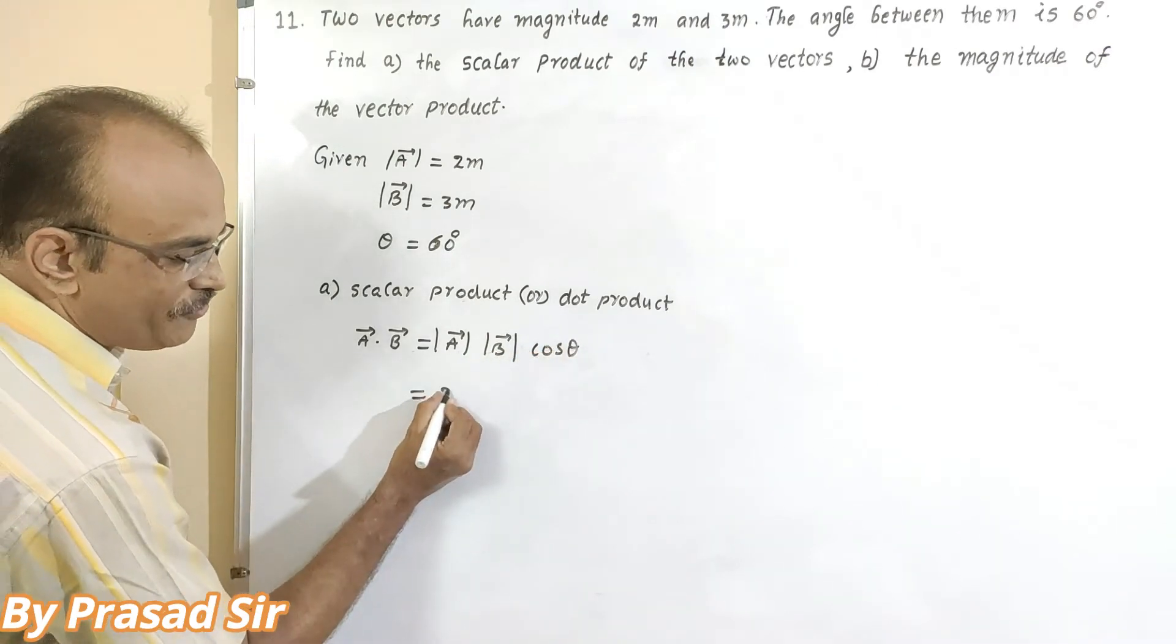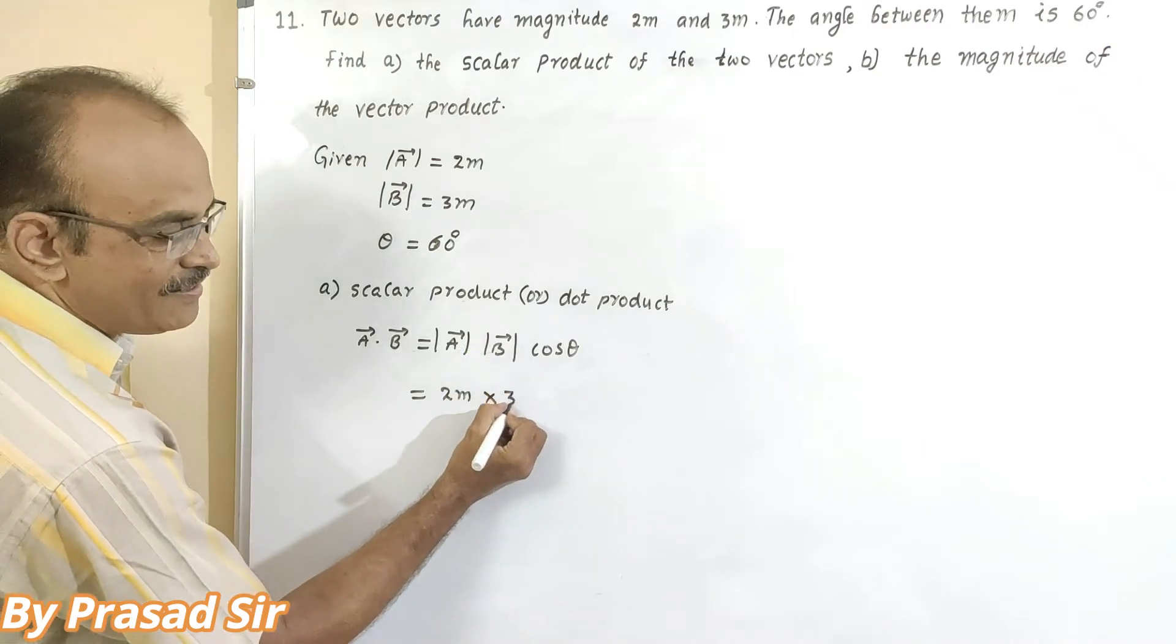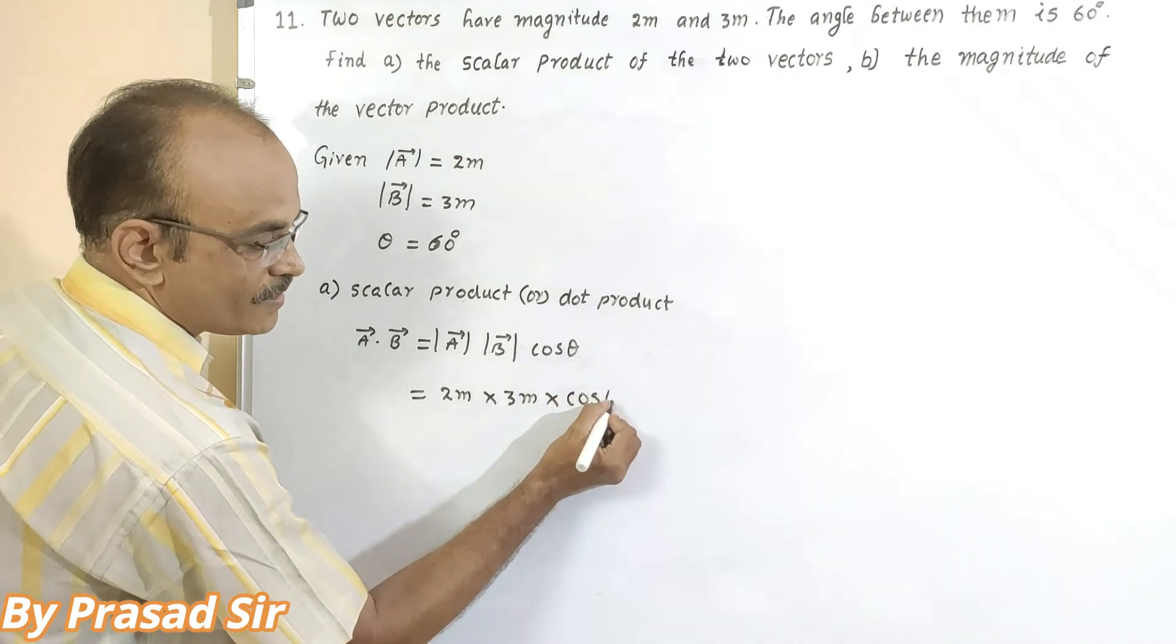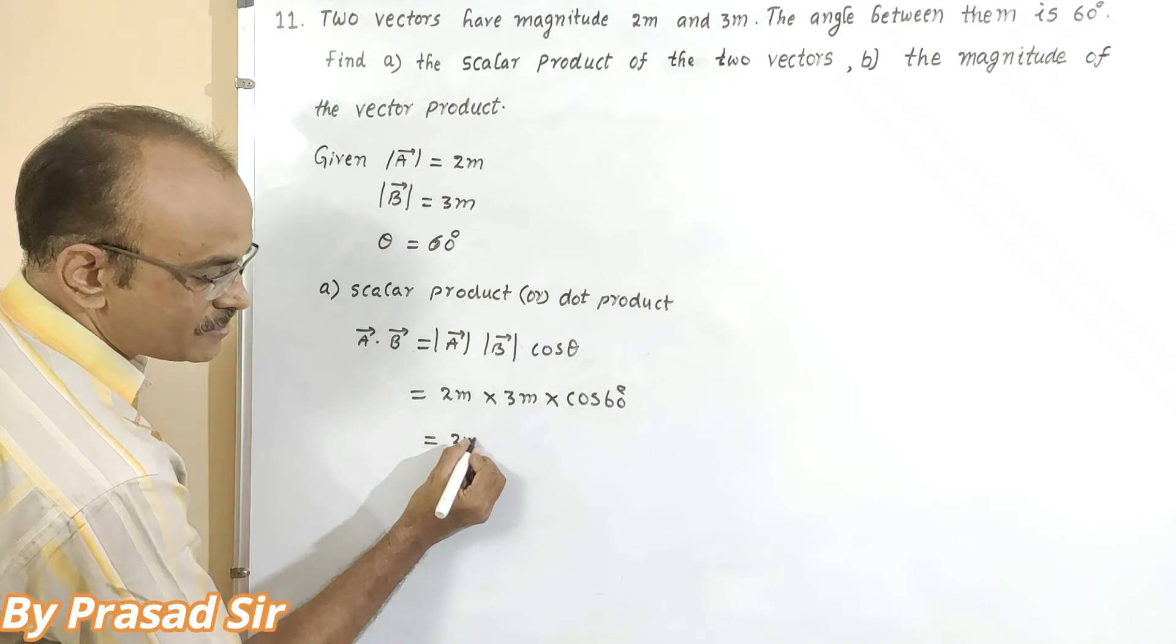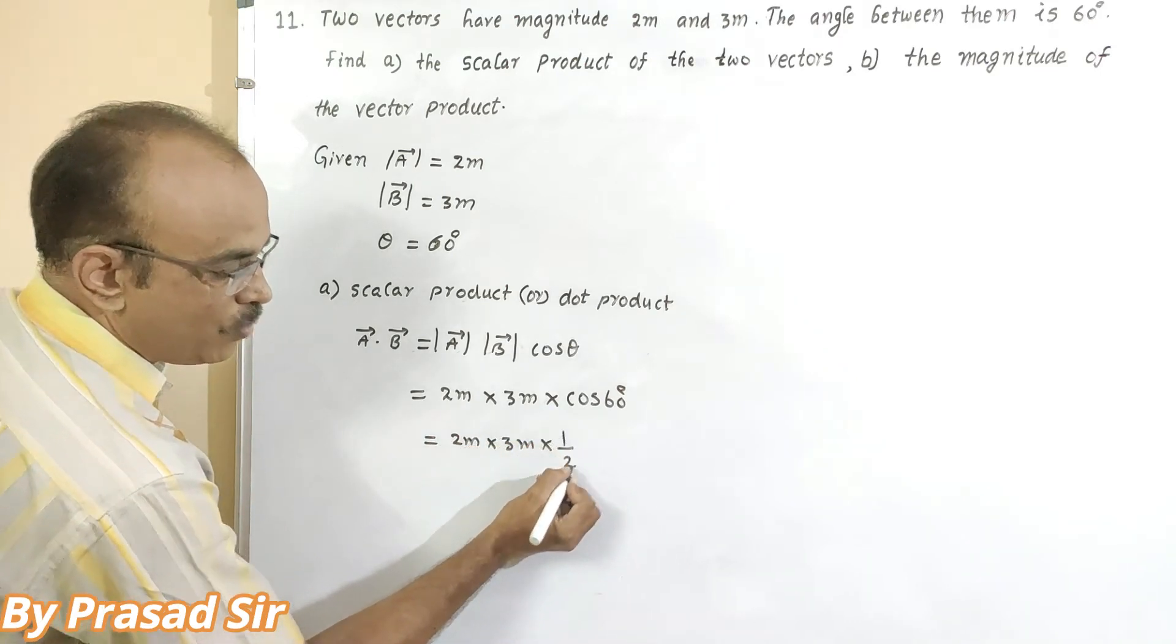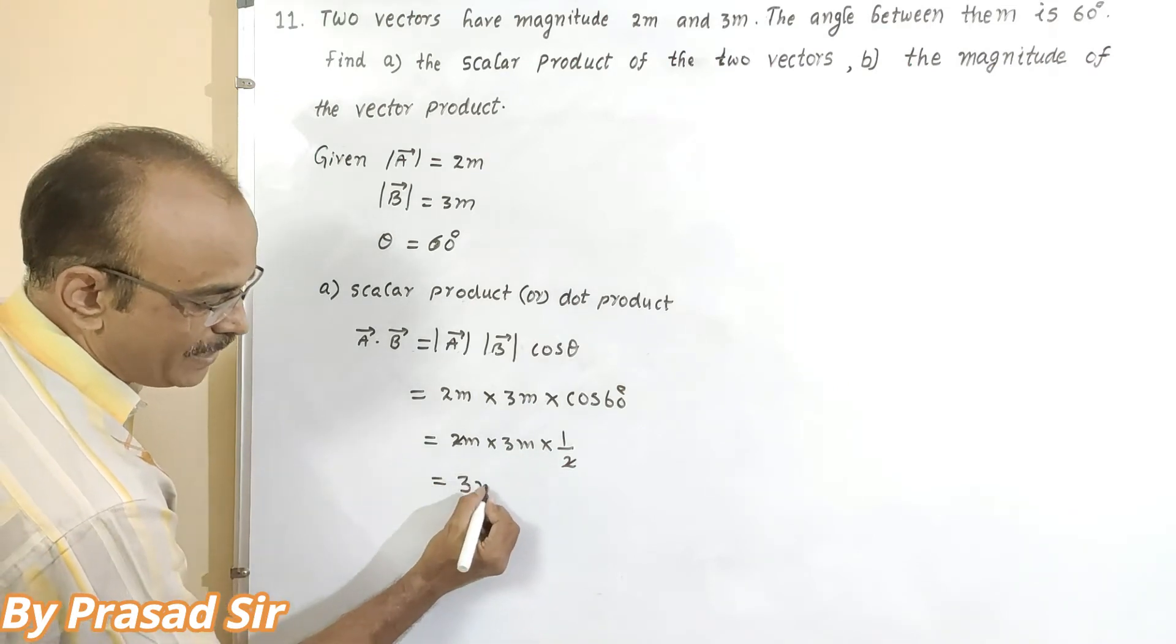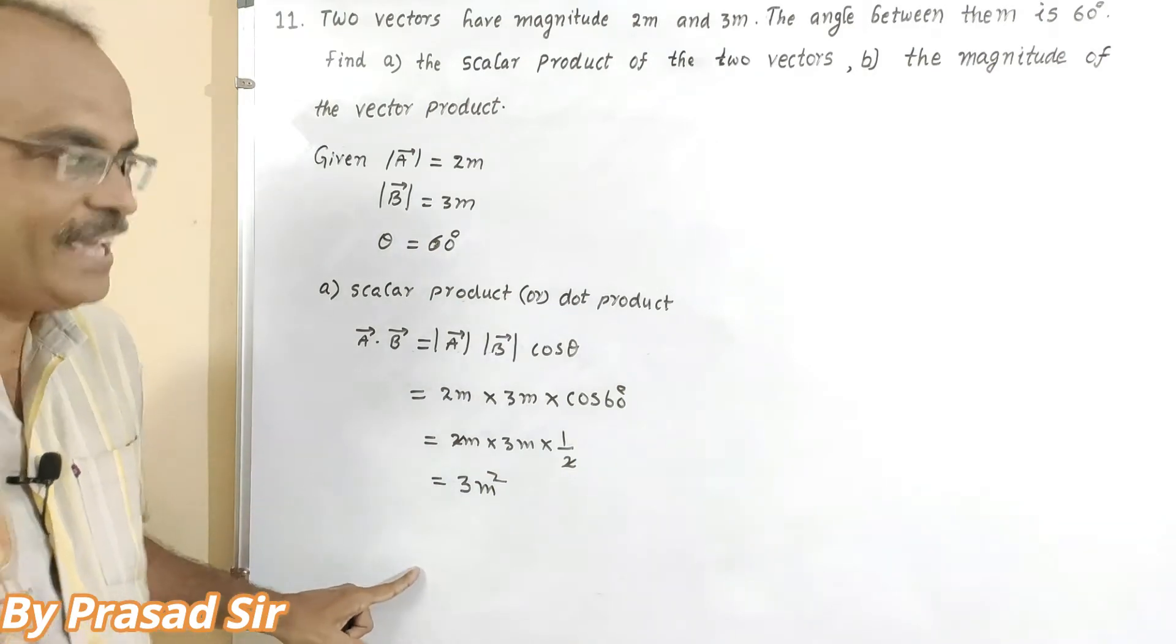So what is the magnitude of A here? 2 meters. What is the magnitude of B here? 3 meters into cos 60 degrees. So here 2 meters into 3 meters into 1 by 2. 2 to cancel. So what is the remaining here? 3 meter square. It is the answer for A.